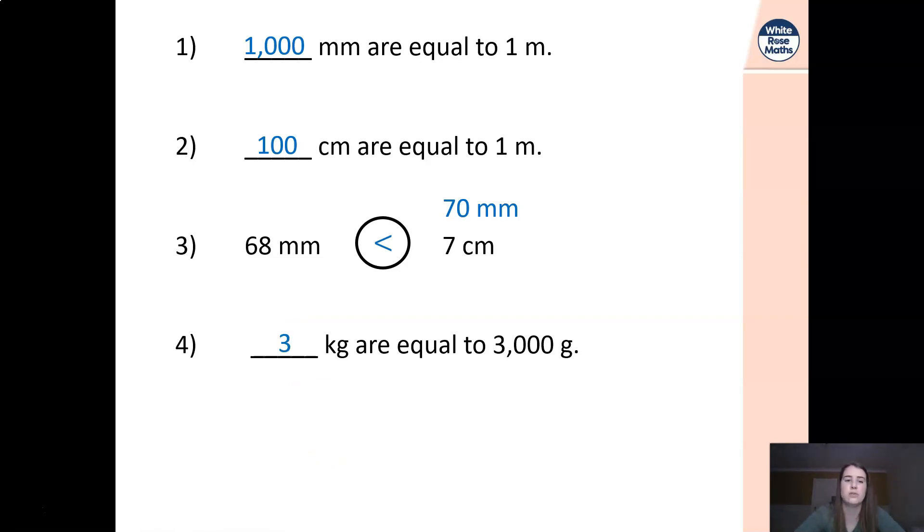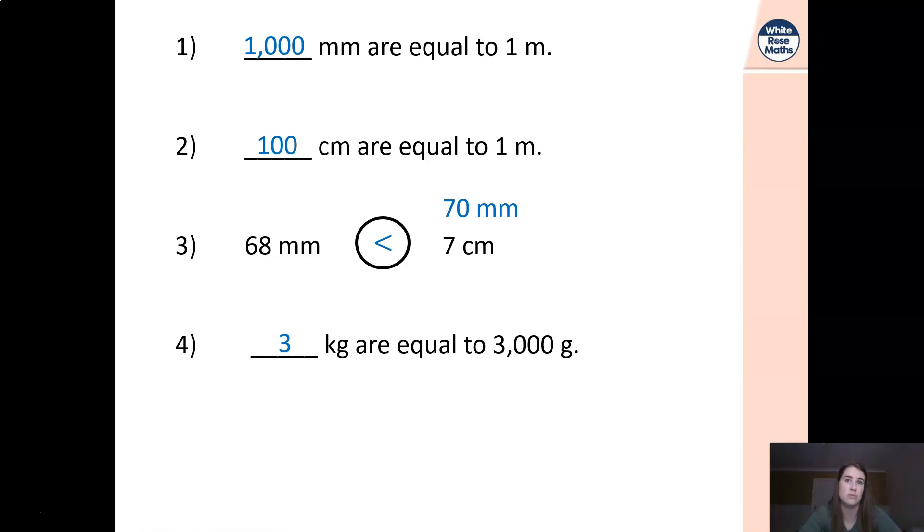Again we divide this by a thousand. We know that three thousand grams is the same as three kilograms. Well done if you've got all four of those correct. There are different ways of going about working them out. If you did make mistakes on there and you know where you went wrong, make sure you correct them so that you can learn from it ready for next time.